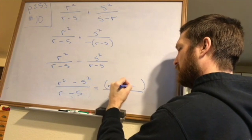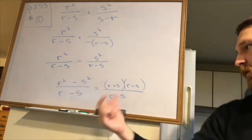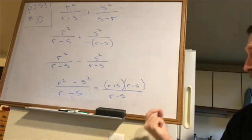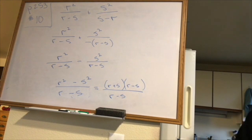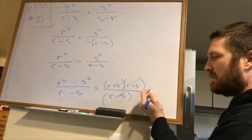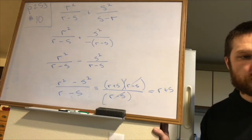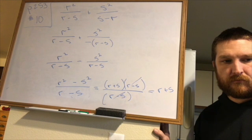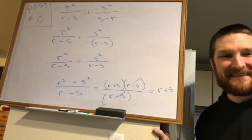Can we cancel anything from the top and the bottom? Yes — the R minus S in the numerator cancels the R minus S in the denominator, leaving just R plus S as the final answer. So the key insight is: anything minus anything else is exactly the same as negative times the reverse. In practice, if two denominators are almost the same but in reversed order, flip them and make that quantity negative.